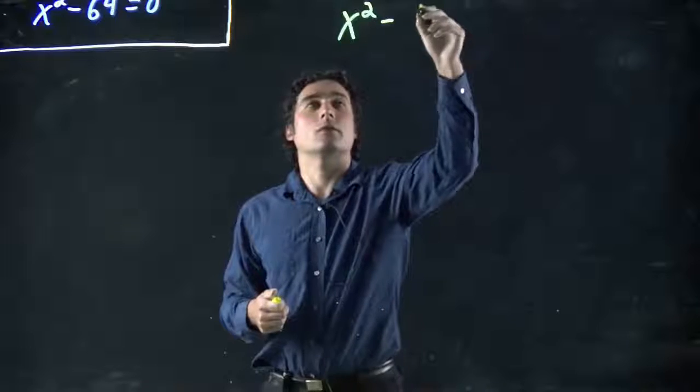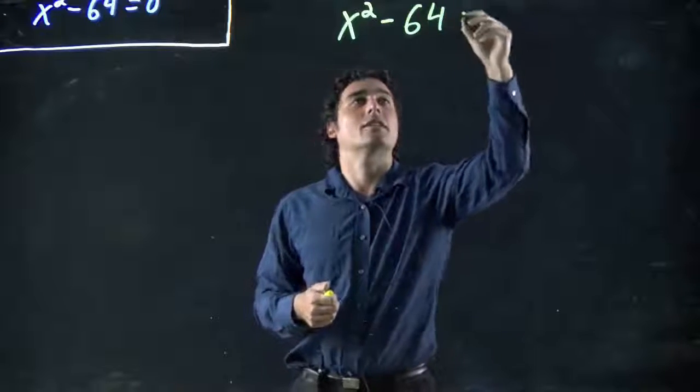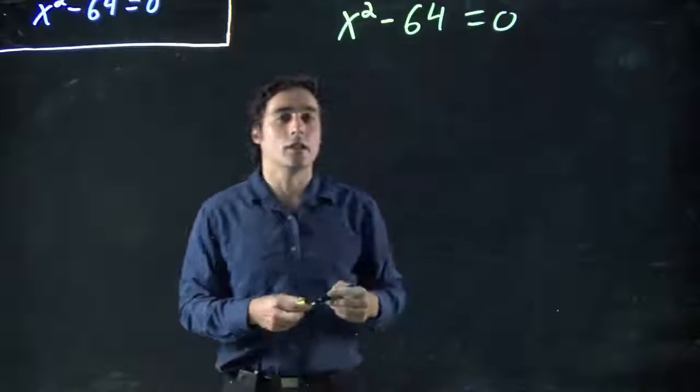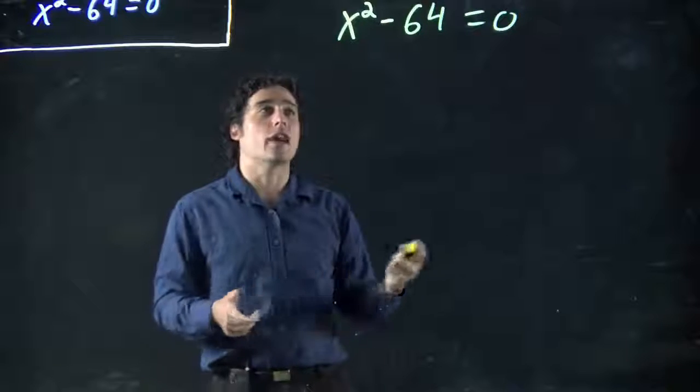So we're going to see what that means in a second, because what do we got? x squared minus 64 equals zero. I want to factor it. I want to solve for x.